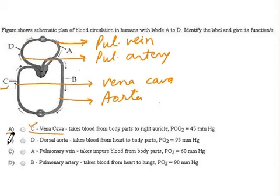Option B says D is dorsal aorta, whereas in the figure D is pulmonary artery, so this is an incorrect label.